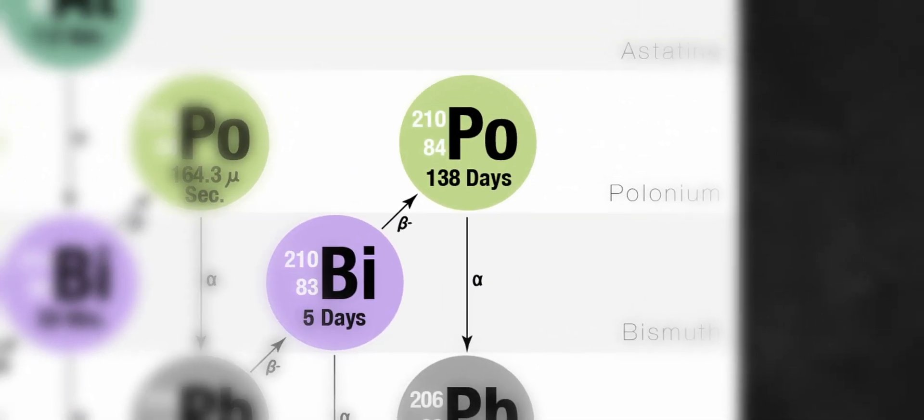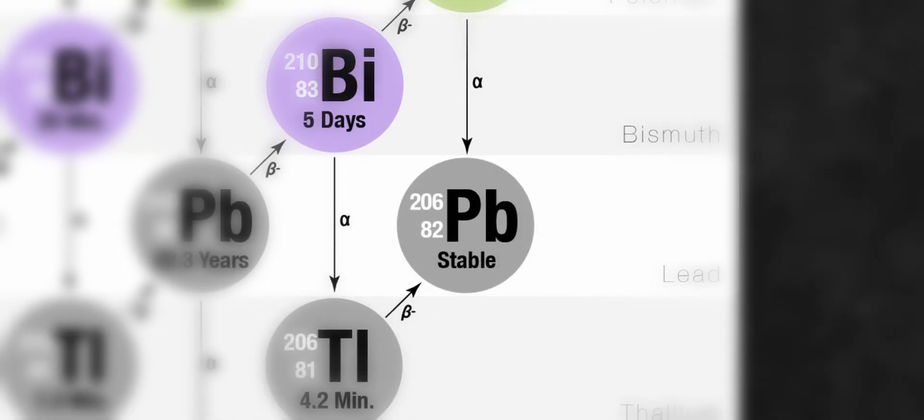Bismuth then undergoes a beta decay into polonium-210, which finally decays into stable lead-206 by releasing an alpha particle.